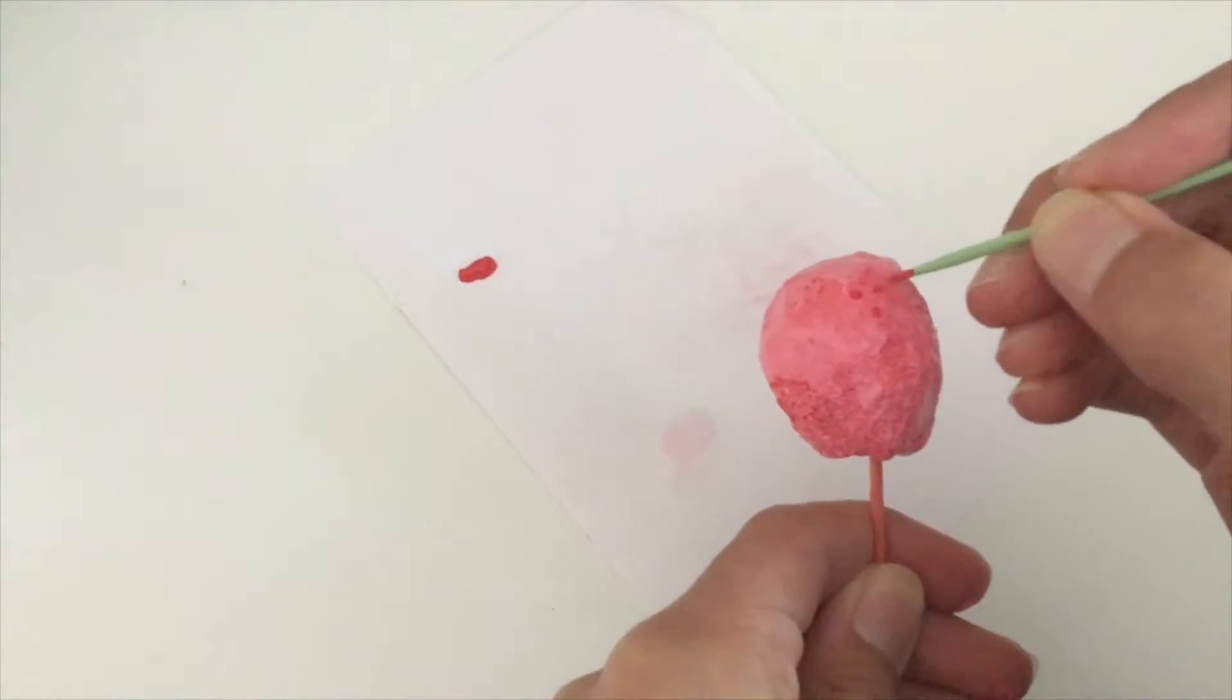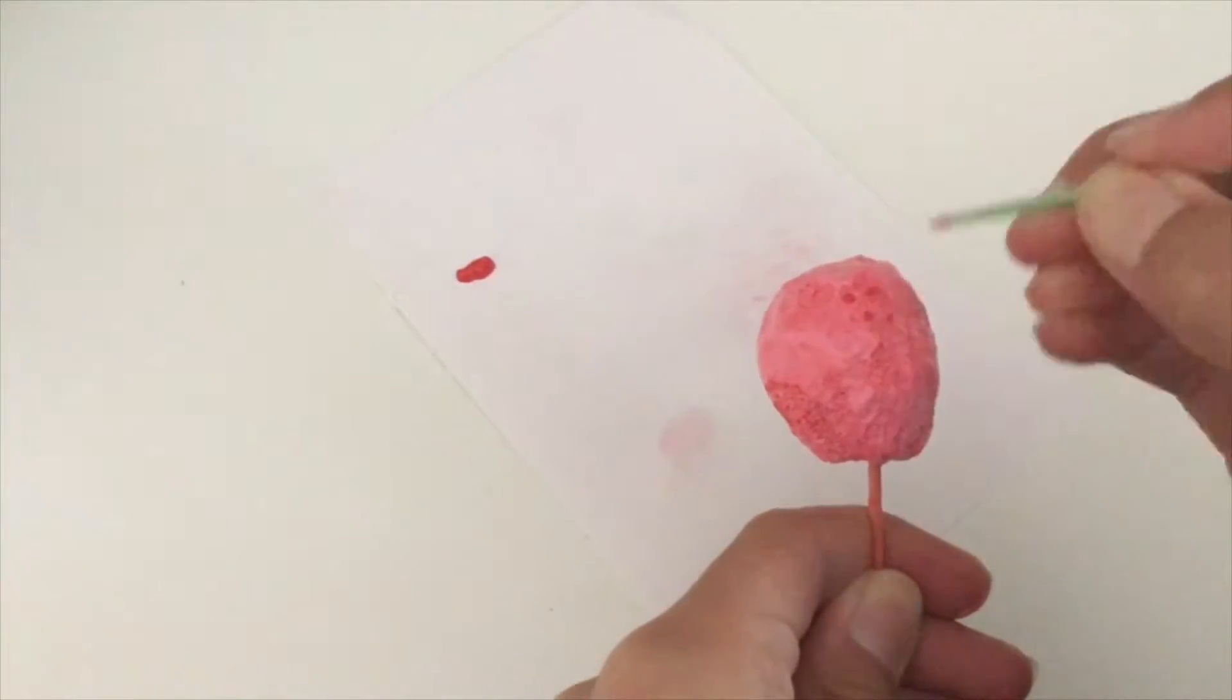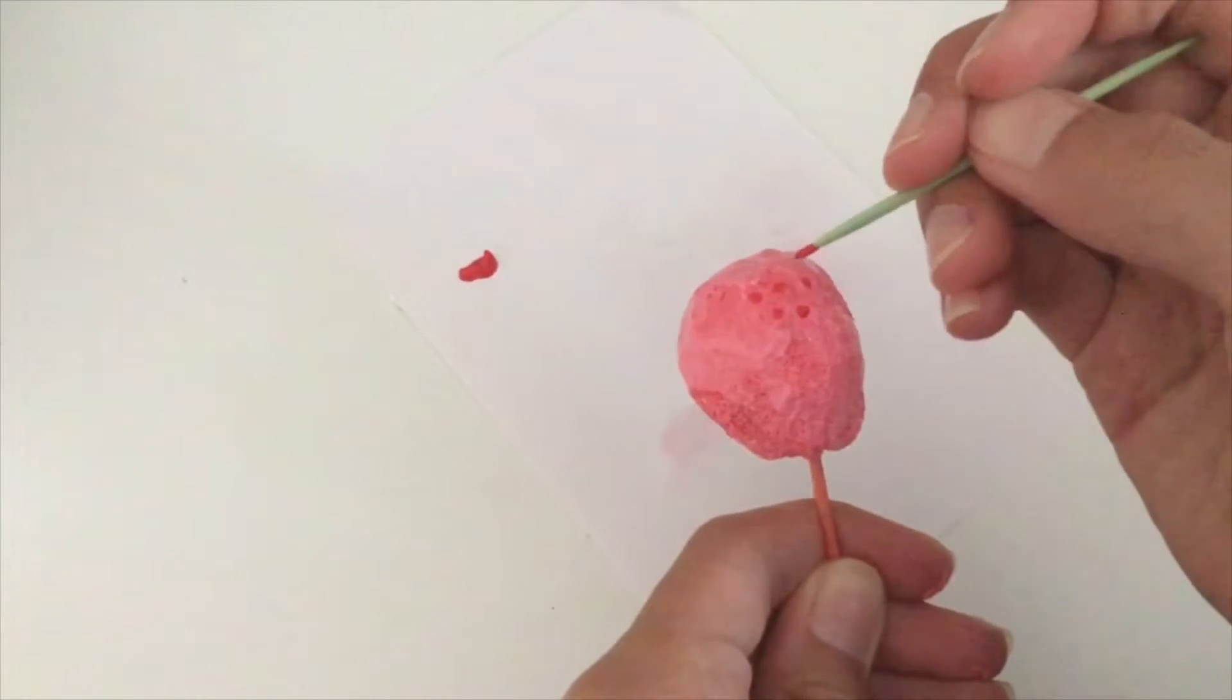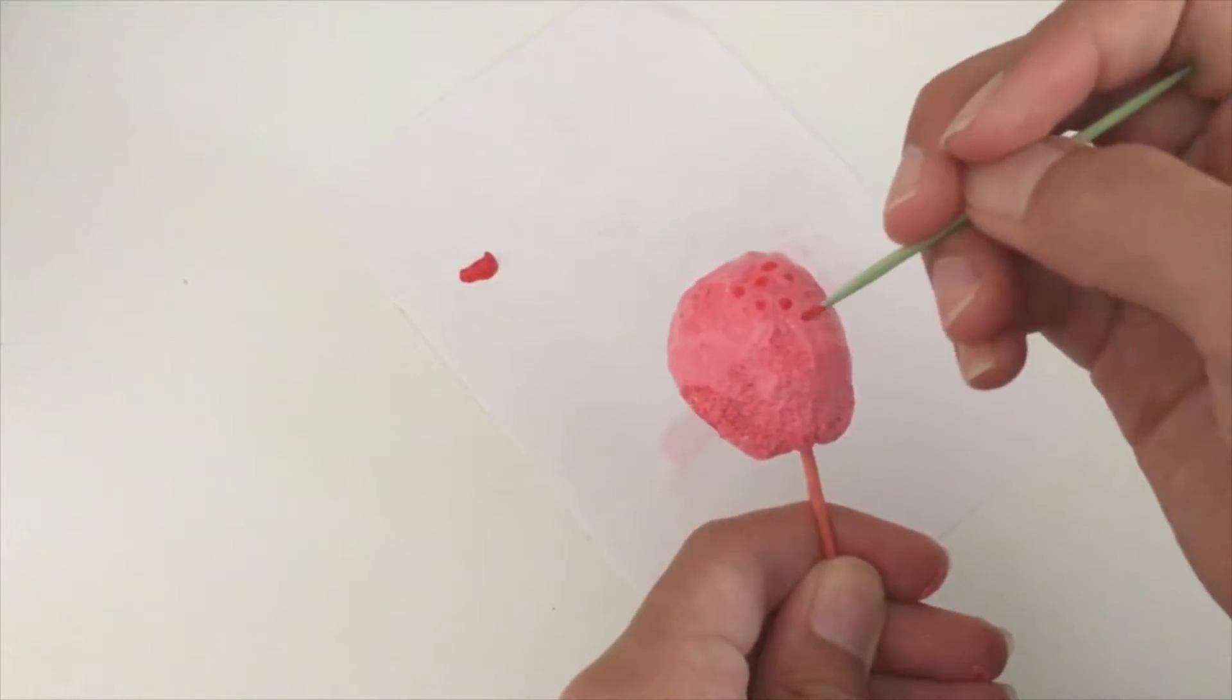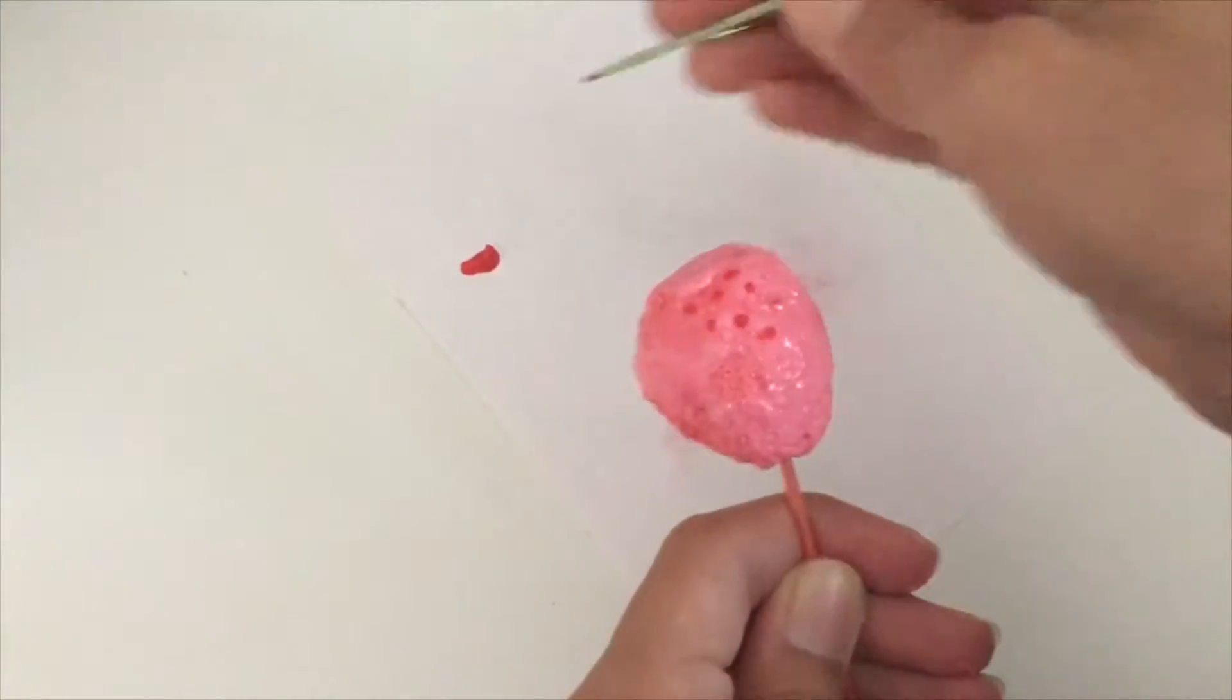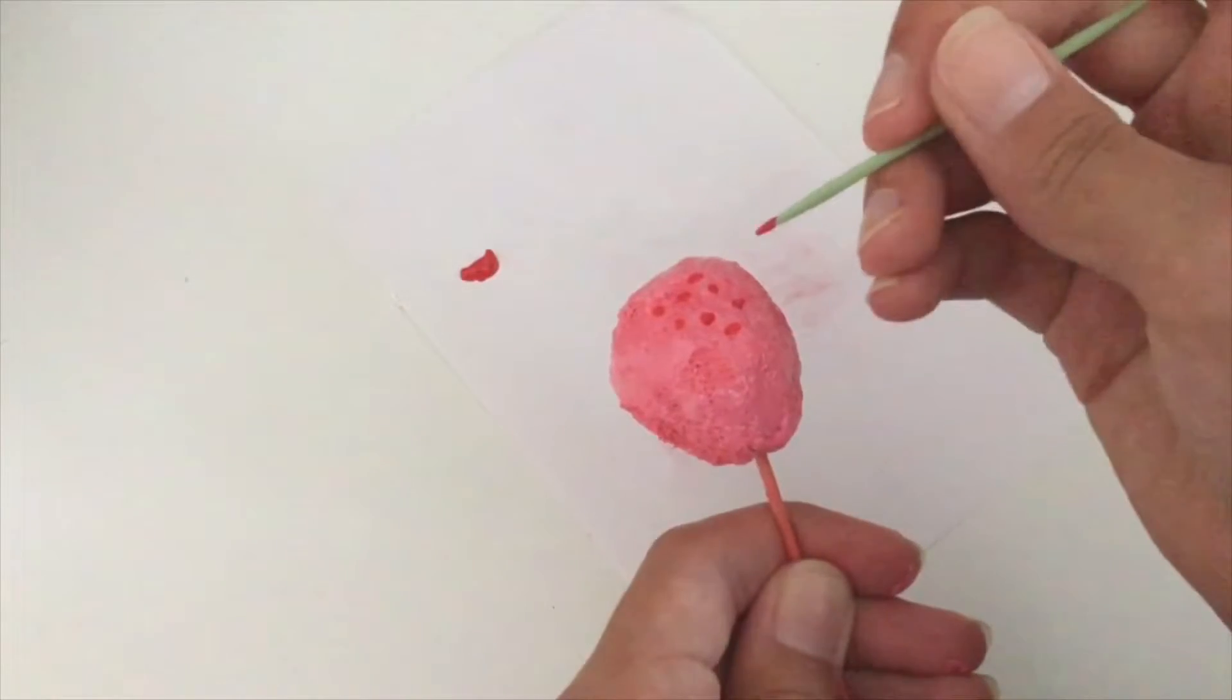Then you need some red puffy paint to do the seeds on it. I just put my squishy on a toothpick so it's easier for me to hold. And this is pretty simple. You just add dots all over your strawberry squishy. There's nothing really to explain right here.